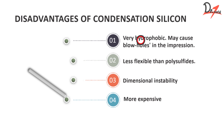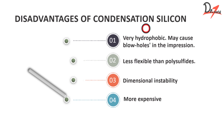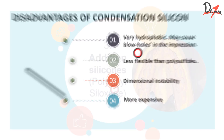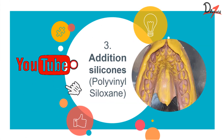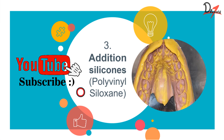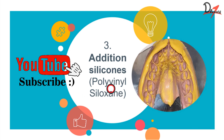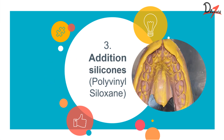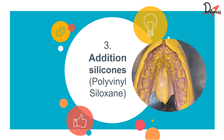To address the hydrophobic issue, manufacturers are now adding non-ionic surfactant to the paste to make it more hydrophilic. In the next video we will discuss addition silicone, which is also called polyvinyl siloxane because of its terminal vinyl groups.